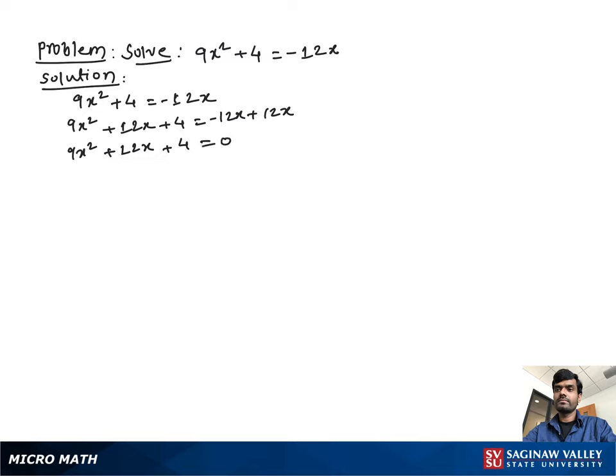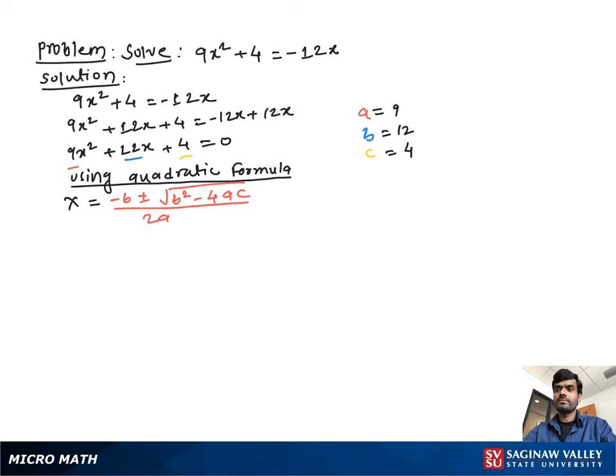So we determine the value of a, b, c: a = 9, b = 12, c = 4. Now using quadratic formula, x = -b ± √(b² - 4ac) / 2a.